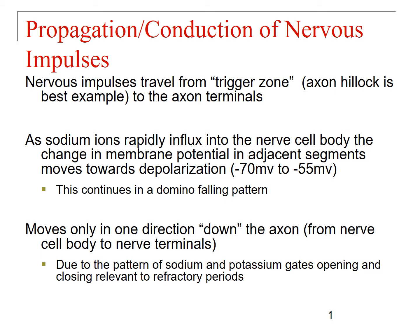The refractory period is the time during which the nerve cannot start another action potential. As one portion of the axon is undergoing its action potential, the previous segment is undergoing a refractory period, and this keeps the propagation one way — from the nerve cell body down to the nerve terminals, one way down the axon.